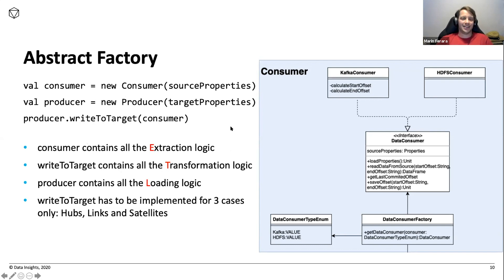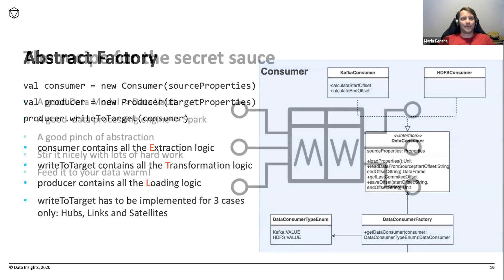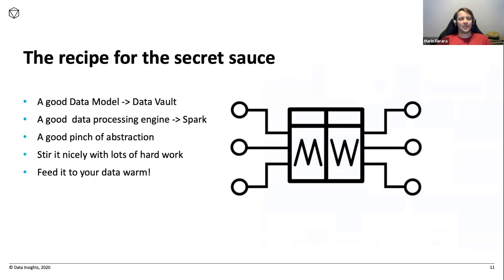The nice thing is you don't ever have to change the transformation logic if you have new sources. It's just a matter of configuration when developing a new consumer or producer.